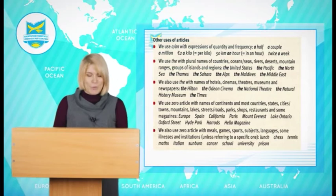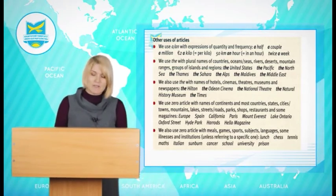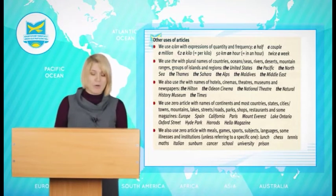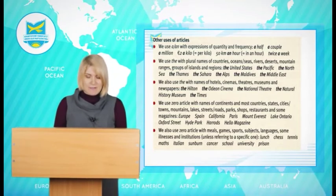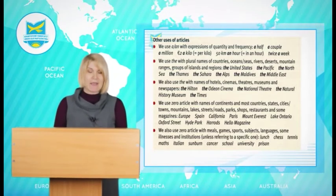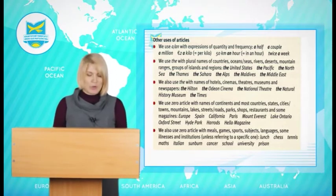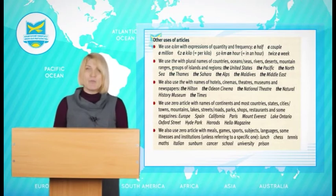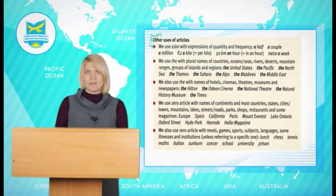We use zero article with names of continents and most countries, states, cities, towns, mountains, lakes, streets and roads, parks, shops, restaurants and some magazines. For example: Europe, Spain, California, Paris, Mount Everest, Lake Ontario, Oxford Street, etc.